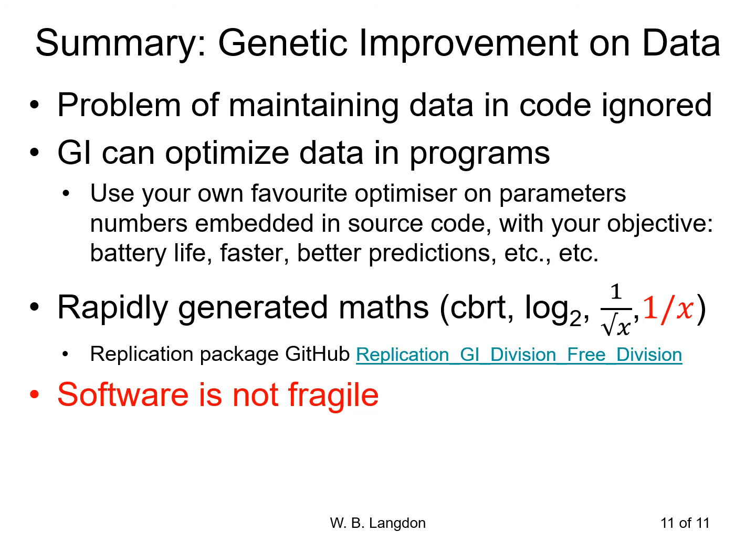Finally, the software is not fragile — obviously this is a bit of a polemic — because you can make changes and lose functionality, but if you're prepared to try again, prepared to try multiple times, prepared to have a population of mutants, put mutants on top of mutants, cross mutants over with other individuals, then you too can evolve surprising results. Thank you.